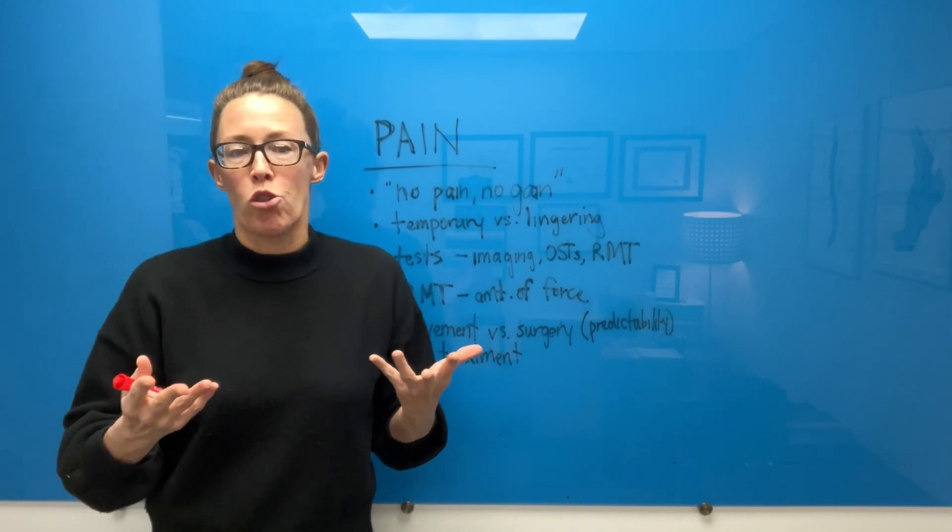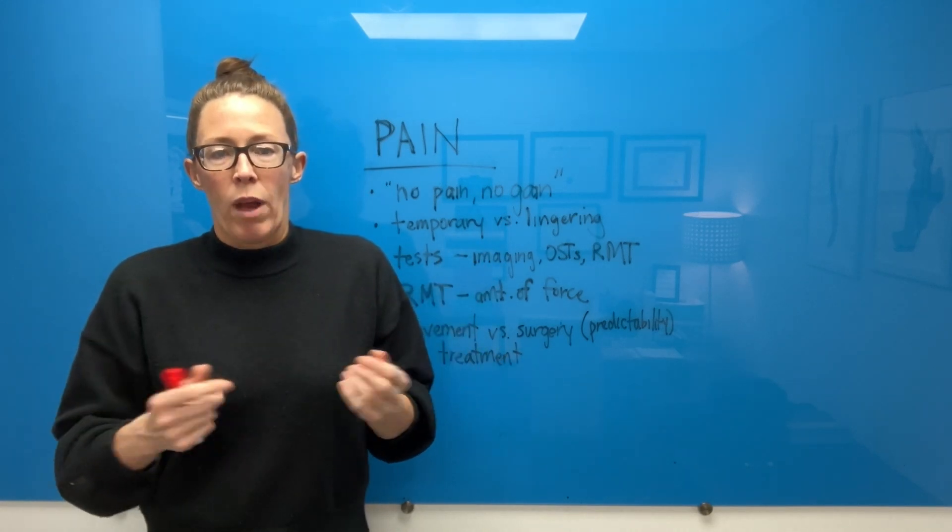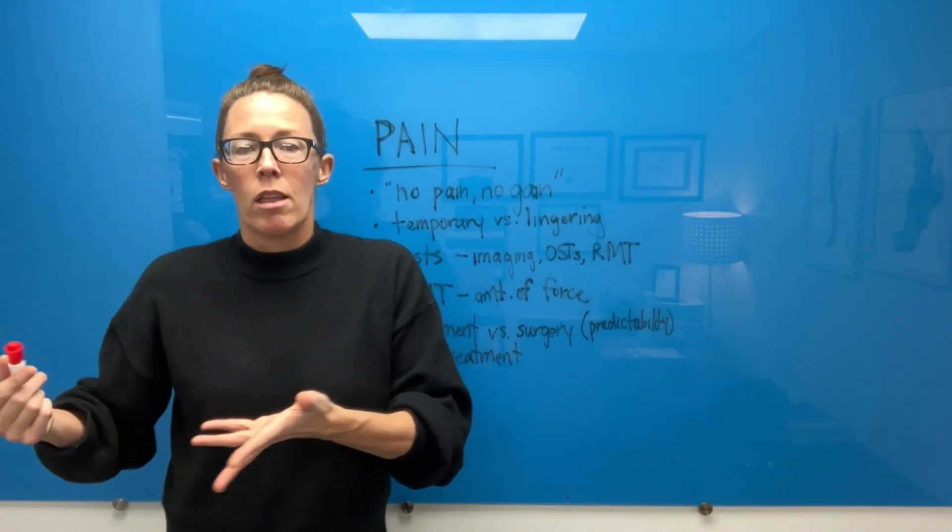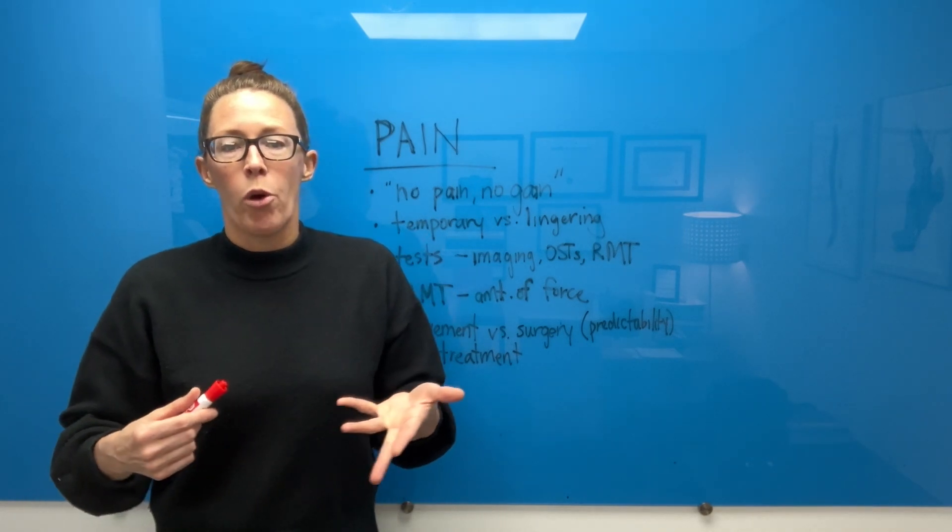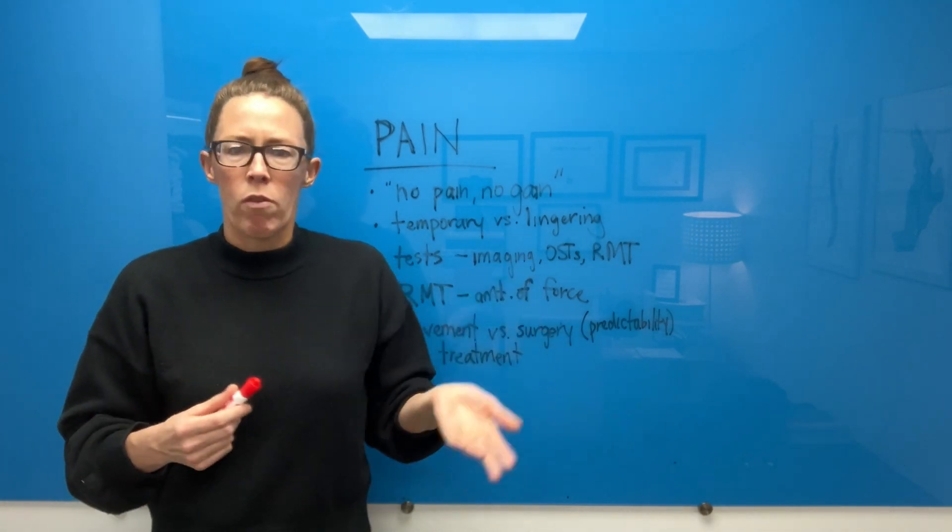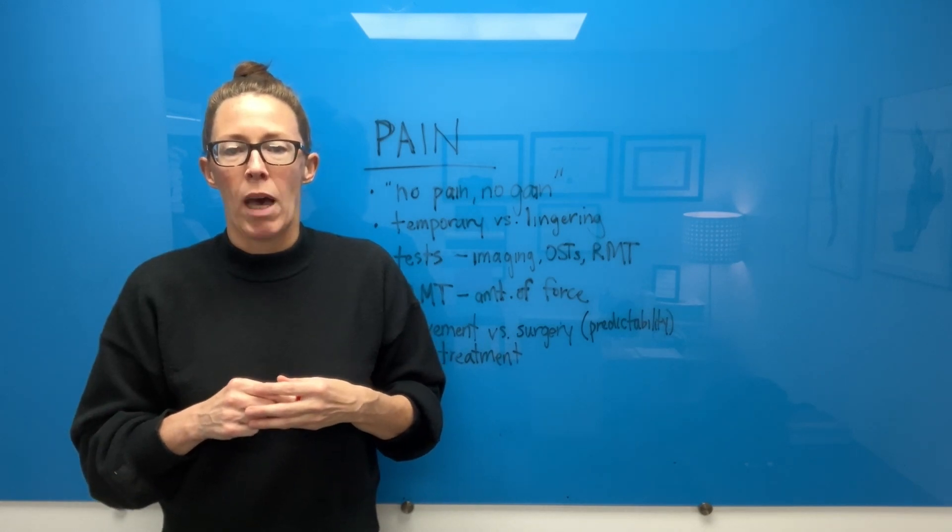Because again, if there were a muscle strain, moving the thoracic spine should not impact the buttock. Or if there were a nerve entrapment in the buttock, moving the thoracic spine should not impact that.